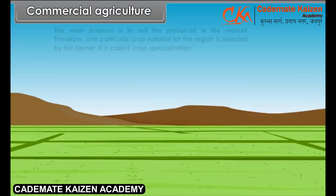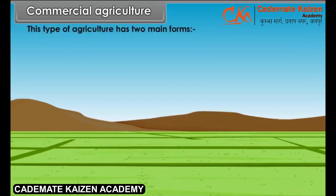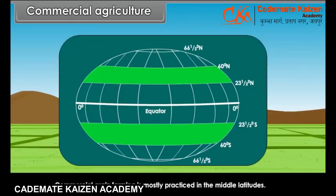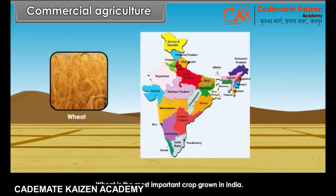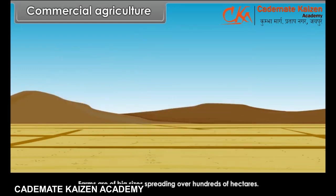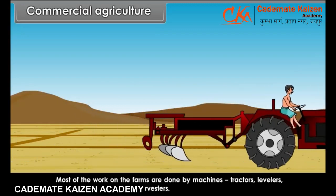Commercial agriculture — the main purpose is to sell the produce in the market. Therefore, one particular crop suitable for the region is selected by the farmer. This is called crop specialization. This type of agriculture has two main forms: commercial grain farming and plantation agriculture. Commercial grain farming is mostly practiced in the middle latitudes, done on sparsely or moderately populated parts of the world. Wheat is the most important crop grown. Farms are of big sizes, spreading over hundreds of hectares. Most of the work is done by machines — tractors, levelers, seed drills and combined harvesters.